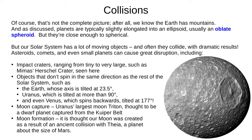The solar system has a lot of moving parts, and often they collide, sometimes with dramatic results. Asteroids, comets and even small planets have caused tremendous disruption, such as impact craters — mostly tiny but sometimes very large, such as Mimas's Herschel crater. Objects that don't spin in the same direction as the rest of the solar system: Earth's axis is tilted 23.5 degrees, Uranus is tilted more than 90 degrees, and Venus is tilted at 177 degrees — it spins backwards. There's also moon capture, such as Uranus's largest moon Triton, probably a dwarf planet from the Kuiper belt. And moon formation — we think our Moon was created by an ancient collision with Theia, a planet about the size of Mars.